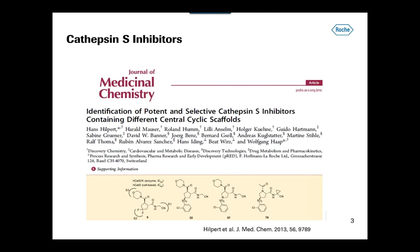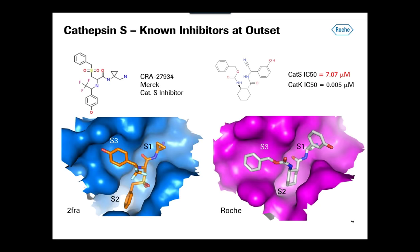I will start right away with an example where computational chemistry has played relatively little role in the scaffold replacement itself, but the example shows very nicely what the questions and also what the difficulties are when you do that. It's a case of cathepsin S inhibitor design, published two years ago. It started with the question: how can we build versatile scaffolds for cathepsin S inhibitors based on what is already known, but with the potential to really tune properties in a very detailed manner? These were two key scaffolds that our project leader, Wolfgang Haab, took into account at the time.